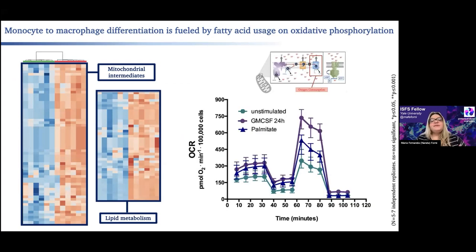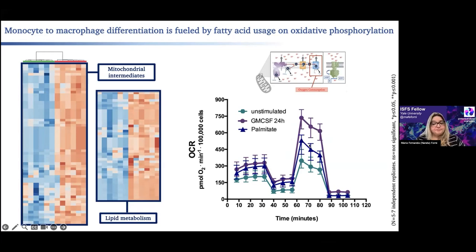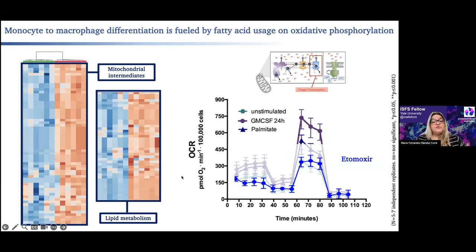When we used mitochondrial respiration — measuring oxygen consumption rates through Seahorse technology — we can see that an undifferentiated monocyte has very low levels of oxidative phosphorylation. When stimulated for 24 hours with a differentiation signal, or when lipids are provided as a substrate, these cells increase their capacity for mitochondrial oxidative phosphorylation. When we use etomoxir, an inhibitor of lipid import via CPT1 into the mitochondria, we ablate this. And with the same setup, we completely abrogated differentiation itself when we blocked lipid utilization.